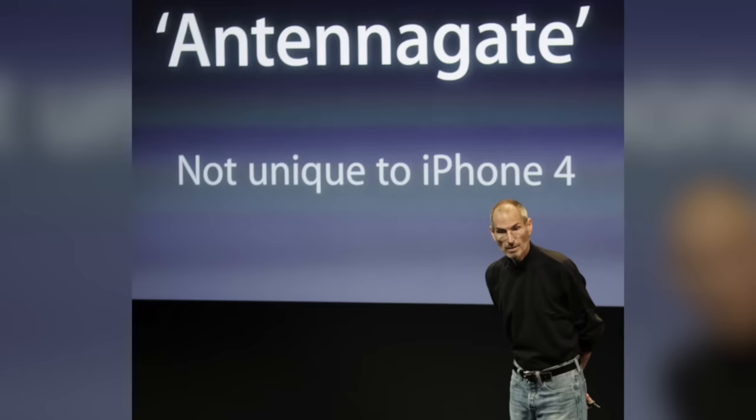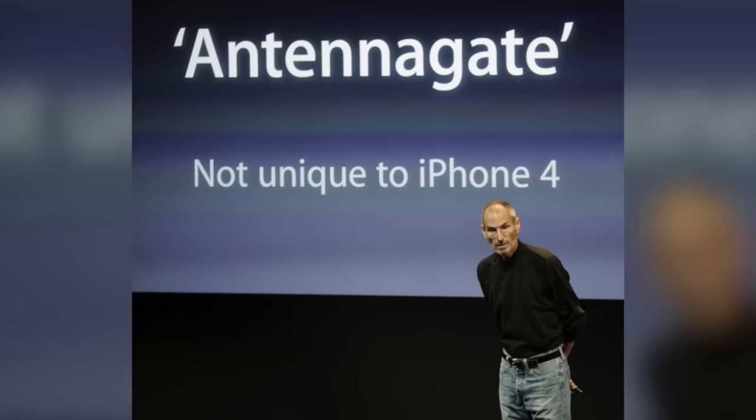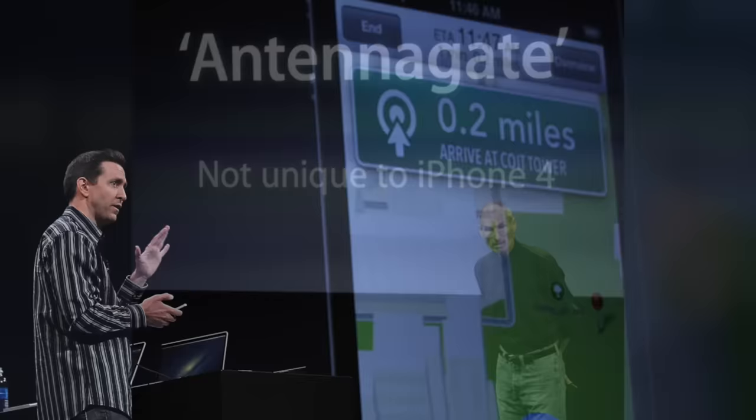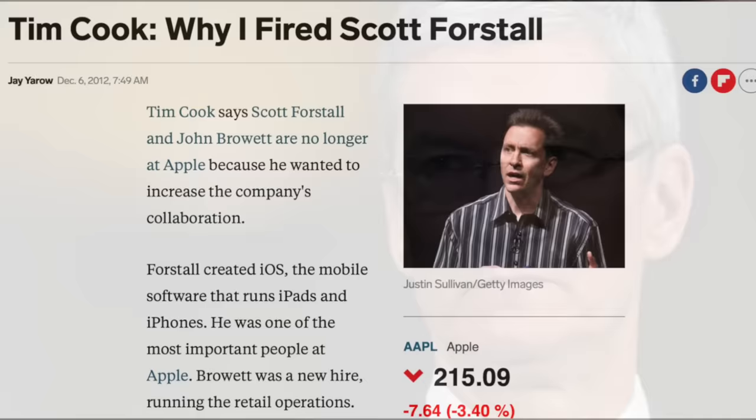Forstall argued that Apple didn't need to apologize. And he compared the situation to the antenna issue with the iPhone 4, nicknamed AntennaGate. Because in that situation, Steve Jobs held a press conference and essentially argued that the antenna system on the iPhone 4 wasn't flawed. And Forstall felt the same way about Apple Maps. According to him, the problems users were having weren't as widespread as it may have seemed, and therefore Apple Maps didn't deserve the level of criticism it was receiving. But Cook disagreed, and Forstall's refusal to sign the Apple Maps apology letter was likely the straw that broke the camel's back, since he was let go from Apple just one month later.